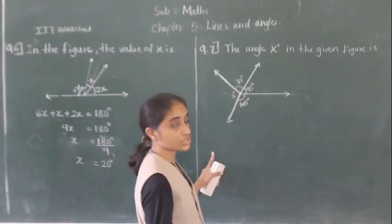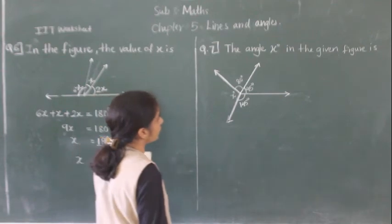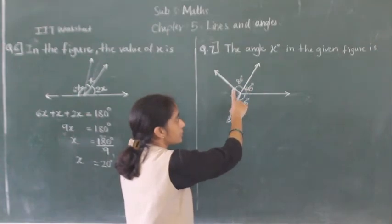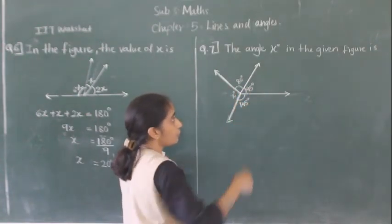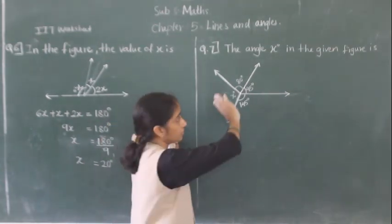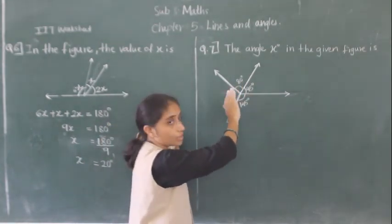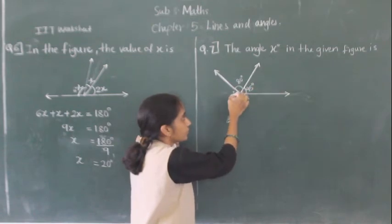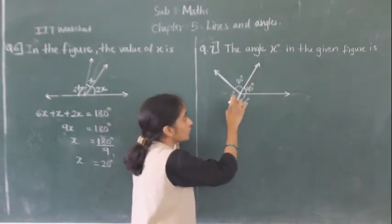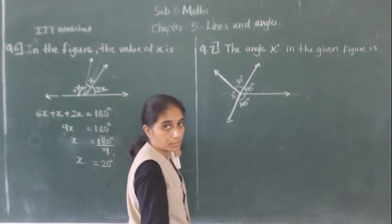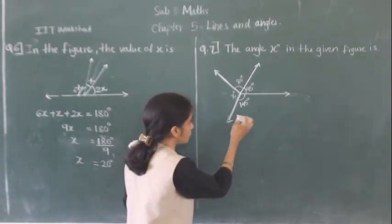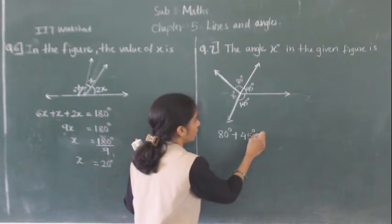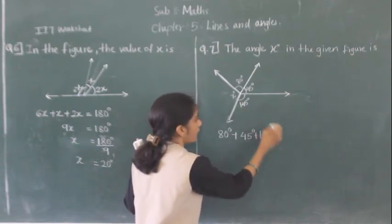Now let's move towards question number 7. The angle x degree in the given figure — this angle we have to find. If you take the sum of these angles forming a circle, we get a complete angle, or whole angle. These angles make a circle. So we can say this is a complete angle. We find the sum of all angles: 80 degrees plus 45 degrees plus 145 degrees plus x degrees.